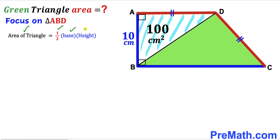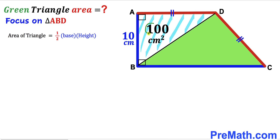Let's recall the area of a triangle formula: area equals one-half times base times height. The base of this triangle is AD, the height is 10 centimeters, and the area is 100. Filling in the formula: 100 equals one-half times 10 times AD. One-half times 10 gives us 5.